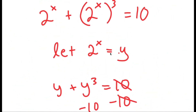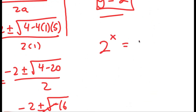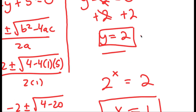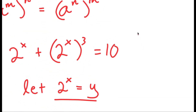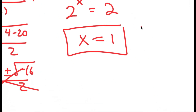Remember, we're solving for x, not y, and we let 2 to the power of x equal y. So I have 2 to the power of x is equal to 2. The only solution to this is x equals 1, because 2 to the power of 1 equals 2. So x equals 1 is my solution to this equation. If you haven't already, please make sure to subscribe, leave a like, and share this video with your friends or family.